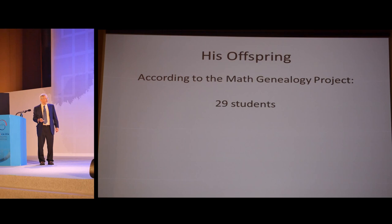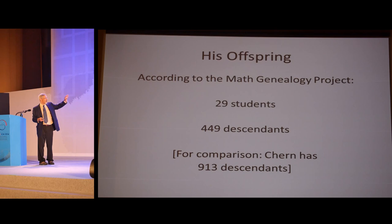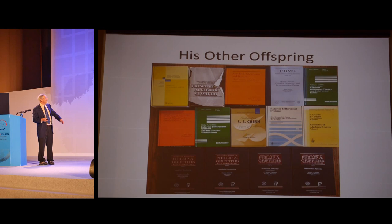He held faculty and administrative positions at some of the absolutely greatest institutions in the United States. He's celebrated for his students. There are many of his students who are quite distinguished mathematicians in their own right. This is the number of descendants he had when I checked earlier on math genealogy: 29 students, 449 descendants. It's staggering. If all of them were here, they would fill a couple of sections of this. Actually, I hope they are all here. Just for comparison, Chern has 913 descendants. This is the gold standard.